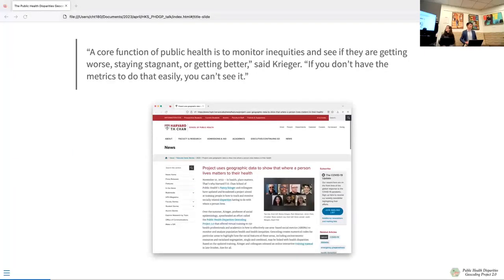A piece was written in the Harvard School of Public Health News, and I thought that this whole quote really summarized what we accomplished and our aims. It's Nancy Krieger saying that a core function of public health is to monitor inequities and to see if they are getting worse, staying stagnant, or getting better. If you don't have the metrics to do that easily, you can't see it. So that's really what this was about, showing people how to monitor health inequities so that we can see whether those metrics are changing, and if so, how.